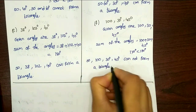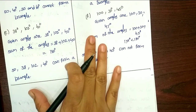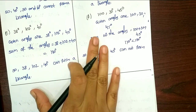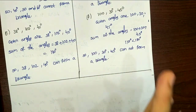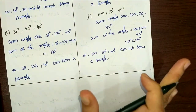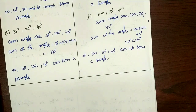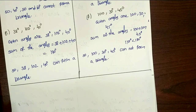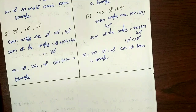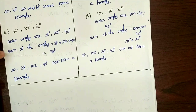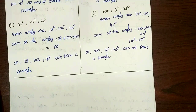So first, remember: a triangle has a total of 3 angles. If the sum equals exactly 180, you can form a triangle. If it is above or below 180, you cannot form a triangle.